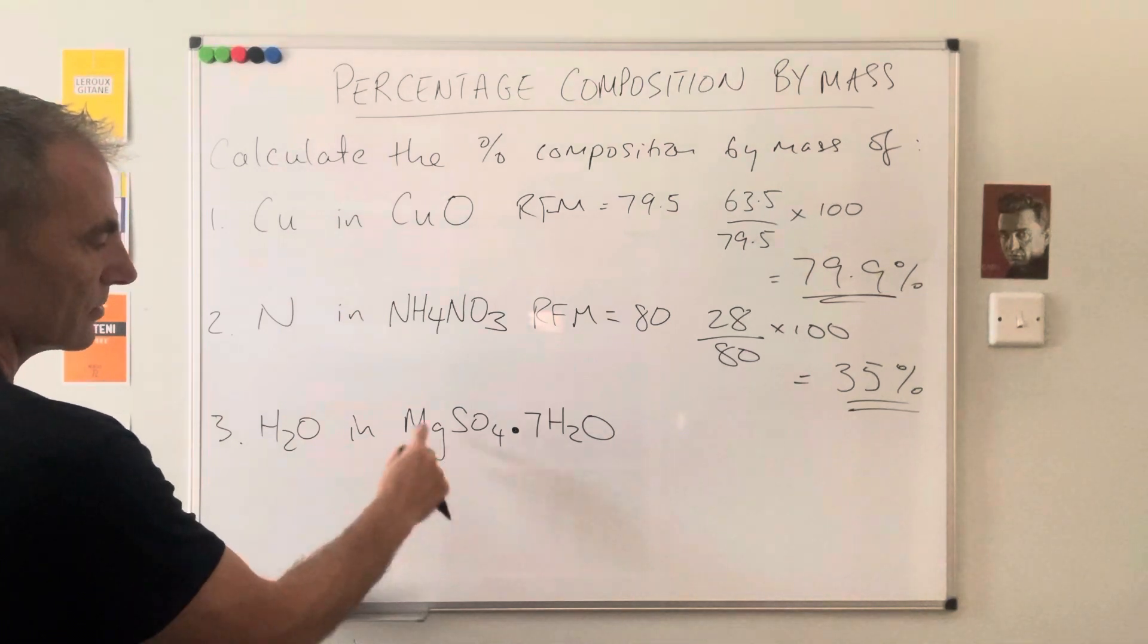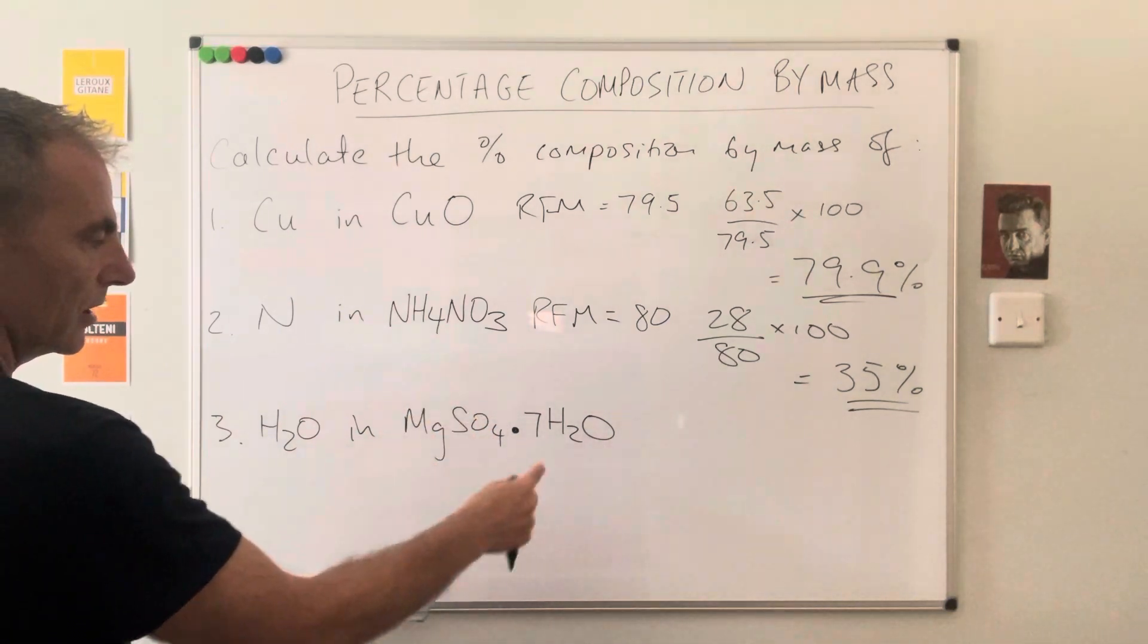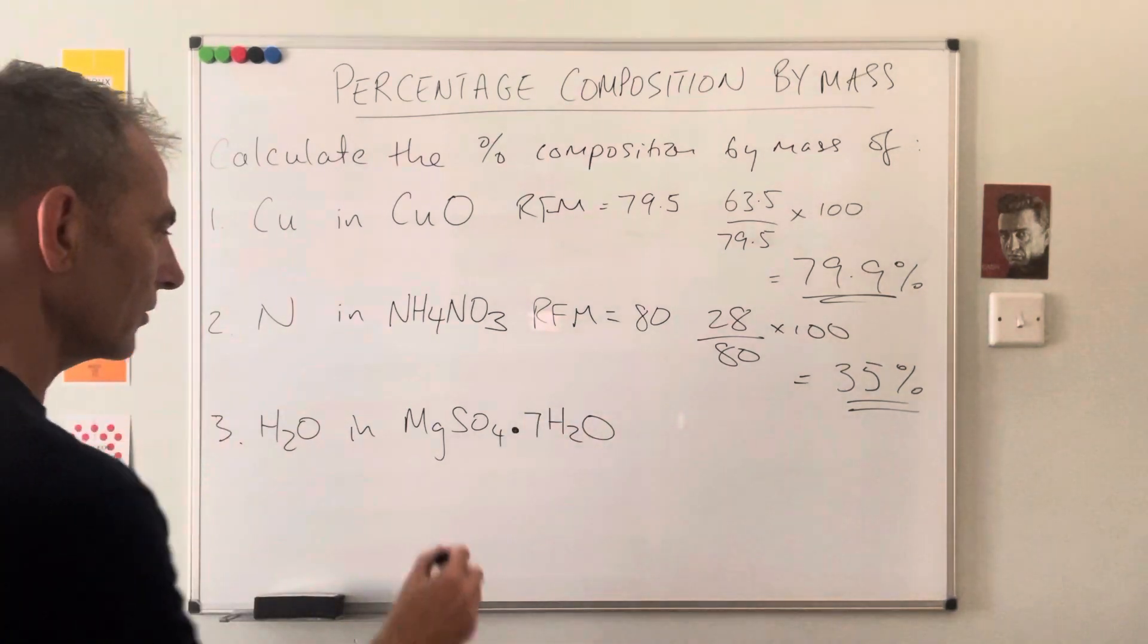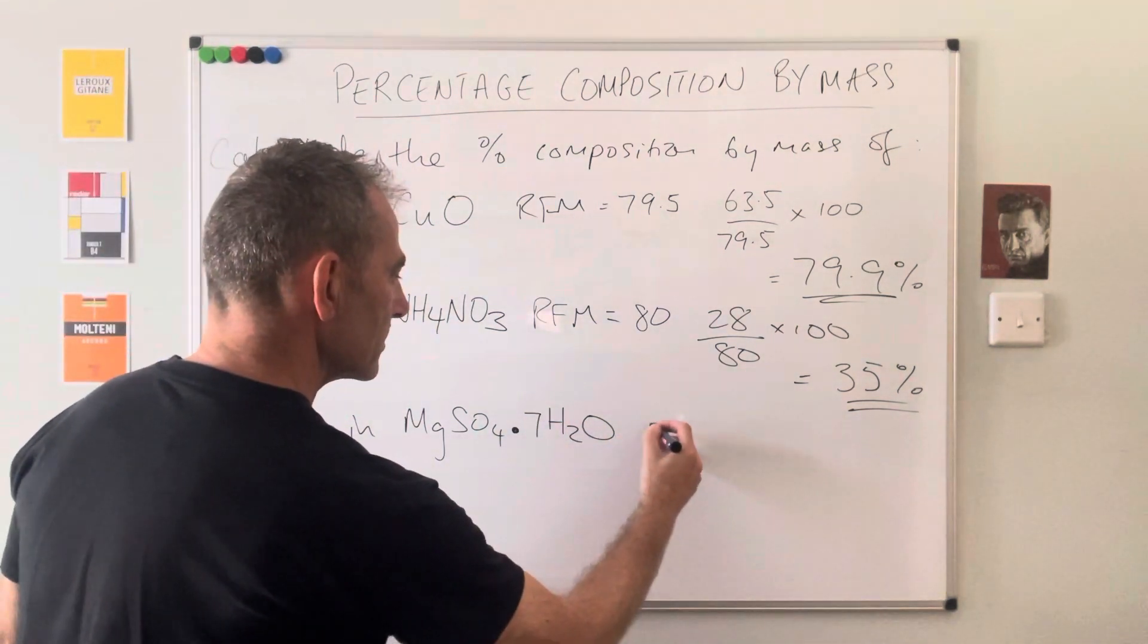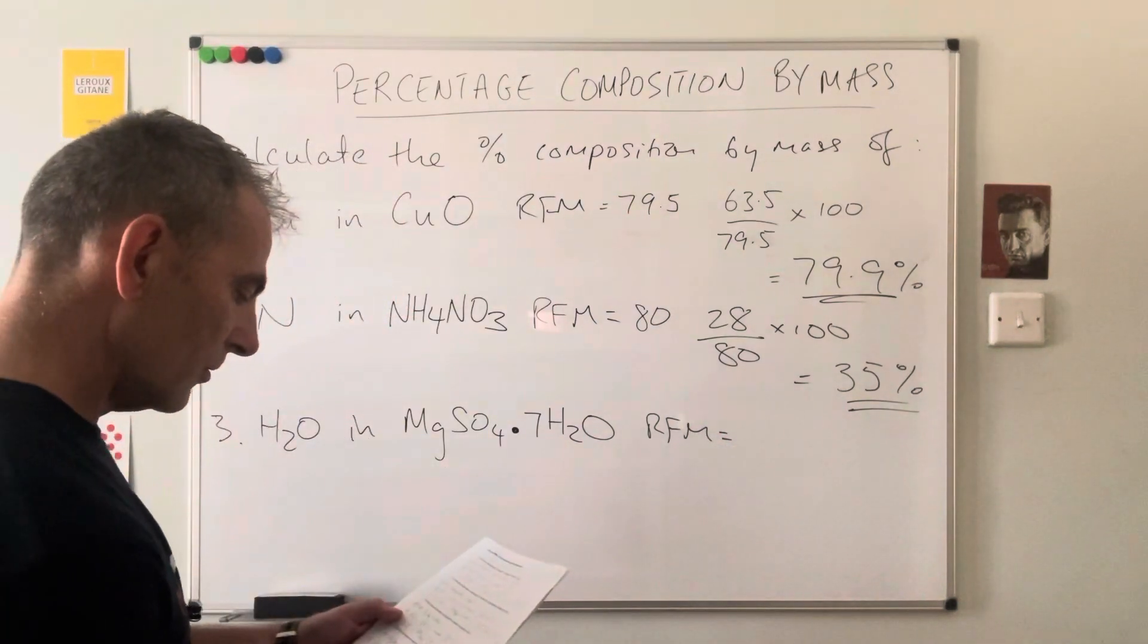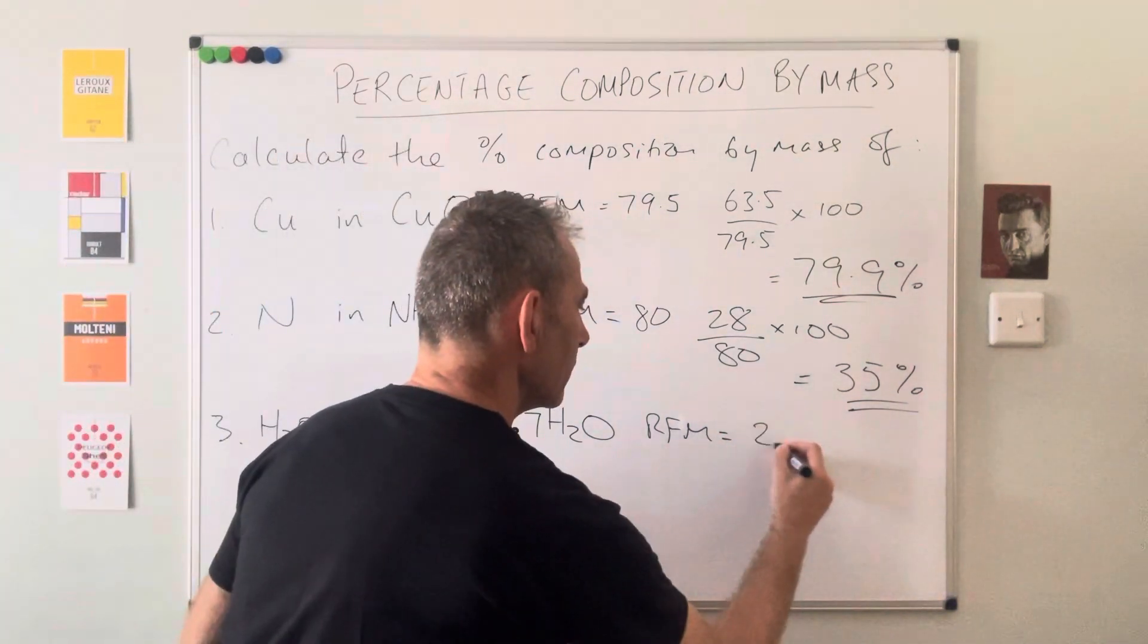So we've got this part here, so there's one of those, and then there's seven waters. So the relative formula mass of this comes out at 246.4.